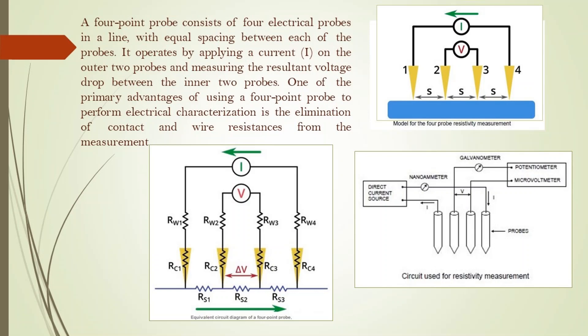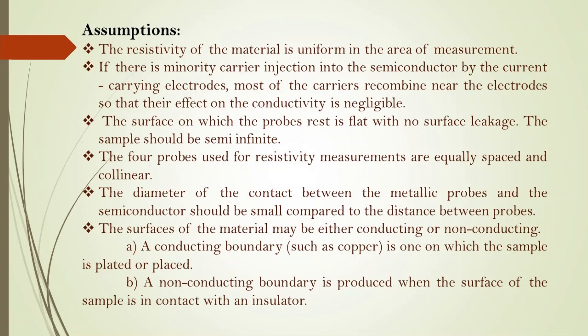Between probes 1 and 4, a direct current source is connected. Between the inner probes — probes 2 and 3 — a potentiometer is attached to measure the voltage drop. There are some assumptions for this experiment: the resistivity of the material should be uniform throughout the area of the sample, and measurements should be made on a surface with a very high recombination rate so that when minority carriers are injected into the surfaces, most recombine near the electrodes and their contribution to conductivity is negligible.